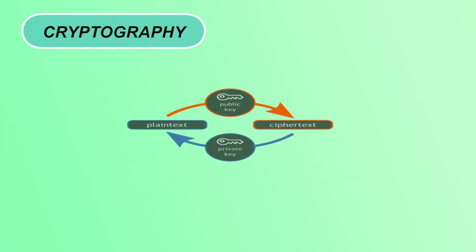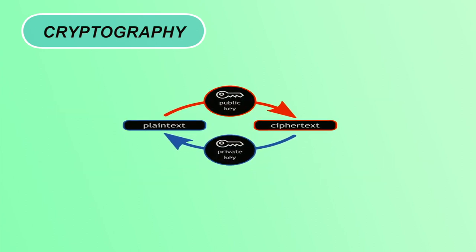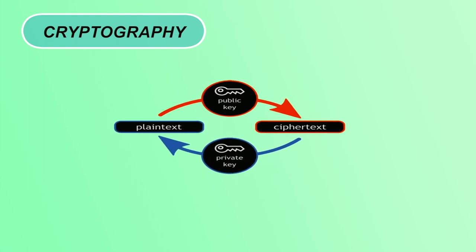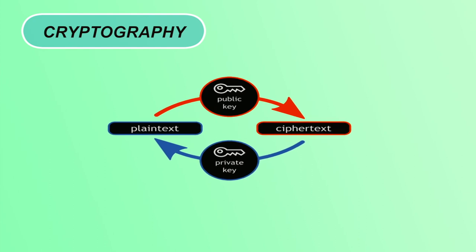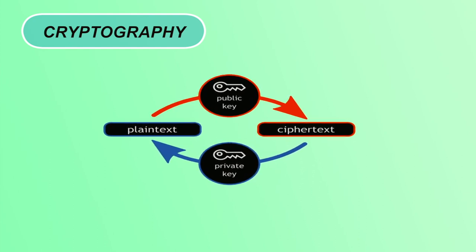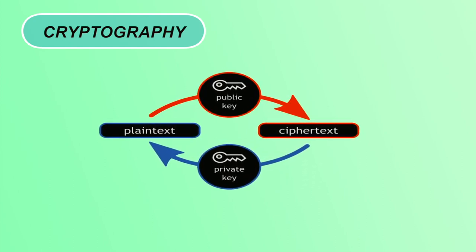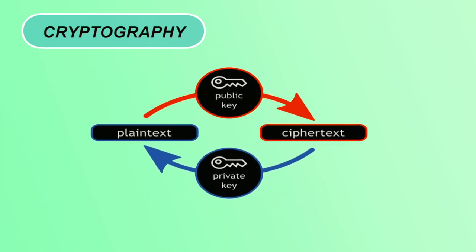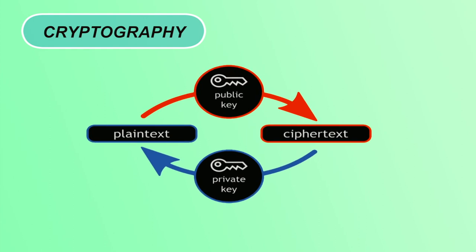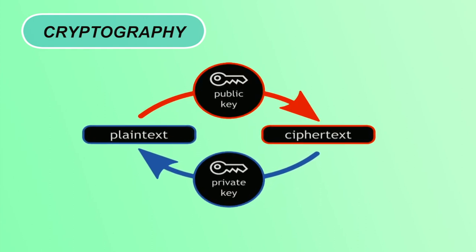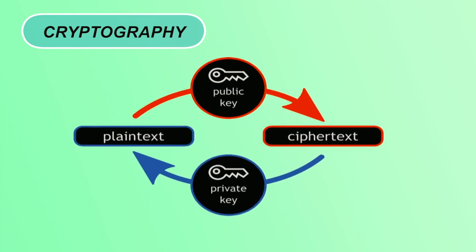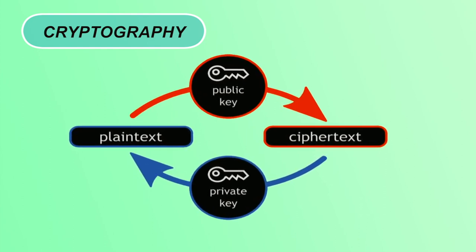In this figure you can see some terms like plain text, ciphertext, public key and private key — I'll explain all these terms in detail in further slides. Basically, the original message which we are trying to convert into non-readable form to prevent it from attackers is called plain text, and the converted form of message is known as ciphertext. We can perform this process with the help of a key.